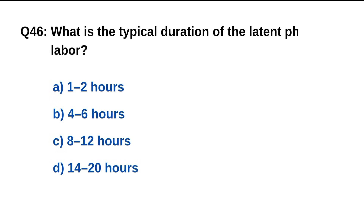Question number 46. What is the typical duration of the latent phase of labor? The right option is C: 8 to 12 hours.